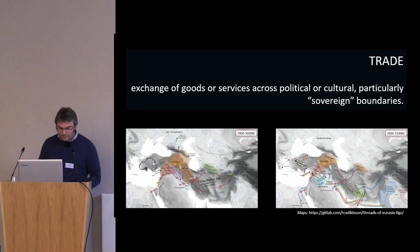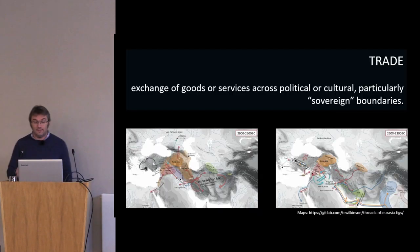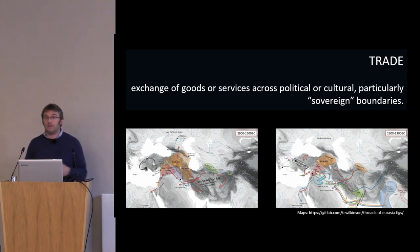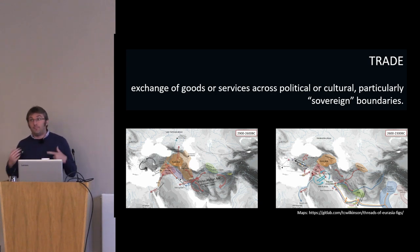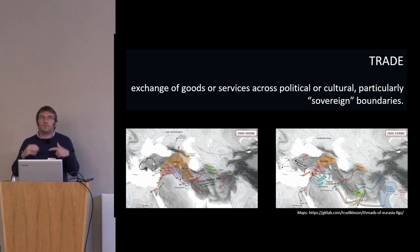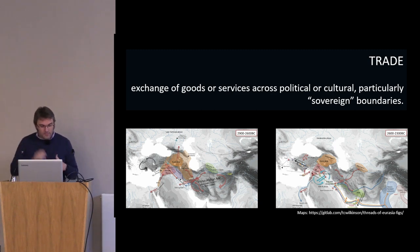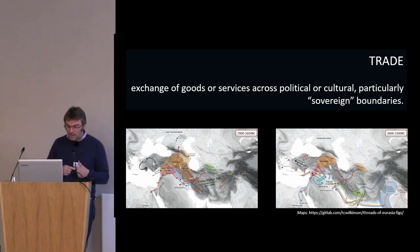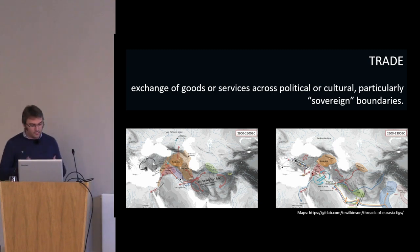Before going further, we need to clarify some terms and scope. First, trade: it's important to be clear what we mean because trade is often elided with exchange more generally in the archaeological literature, especially in prehistory, when it's difficult to differentiate different mechanisms. Here we use trade to mean something quite specific — the exchange of goods or services across political, cultural, and particularly sovereign boundaries.